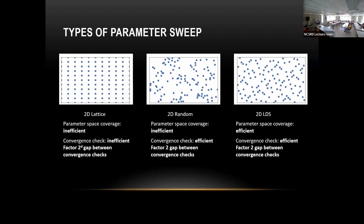A low discrepancy sequence is better: you keep generating points, and for any given number of points, the set generated covers the space as well as reasonably possible. You can't be perfectly uniform for any arbitrary number of points, but asymptotically it covers the space much better than lattice or random samples, and it also has efficient convergence checks.